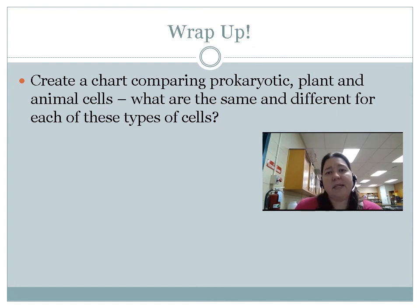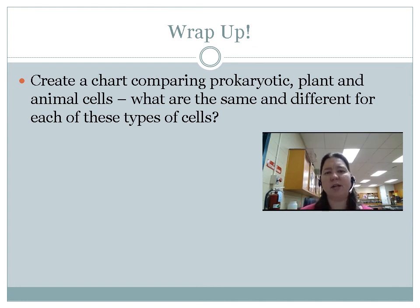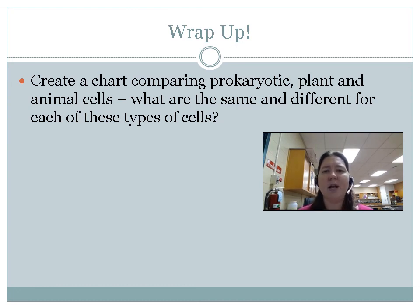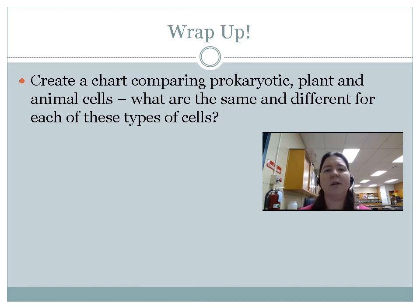So that was really easy and quick, really short. Your wrap-up: create a chart — any kind of chart, some sort of visual representation. It can be a Venn diagram, it can be a table, whatever — comparing prokaryotic cells, plant and animal cells. What's the same? What's different? I will see you in class. Have a great day.